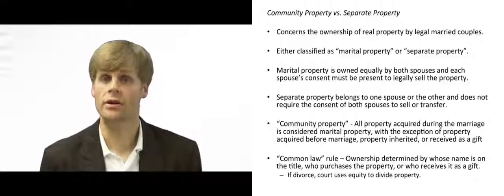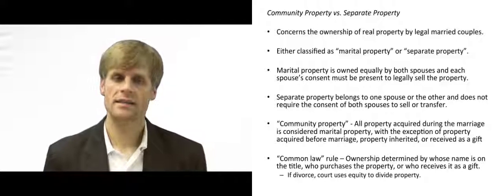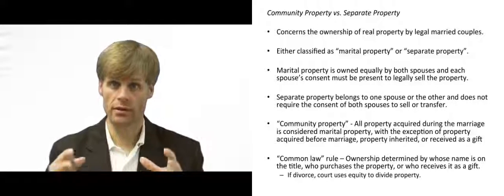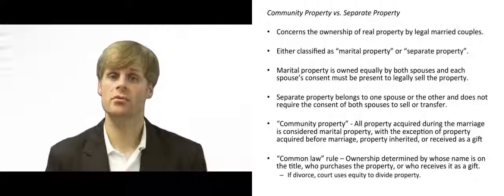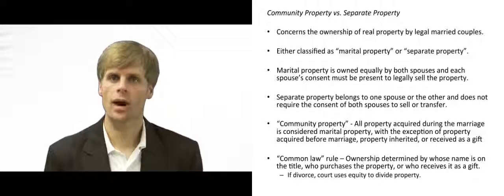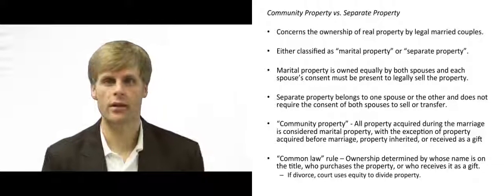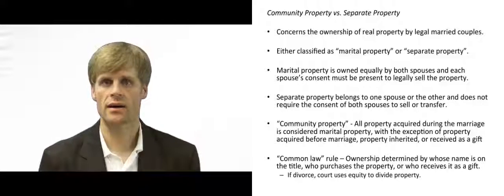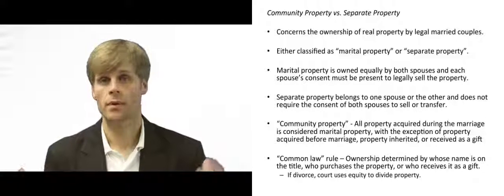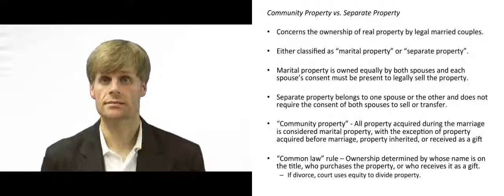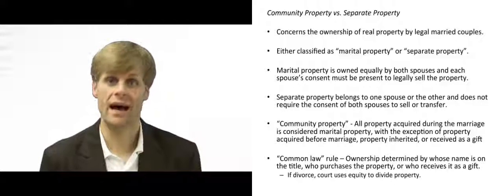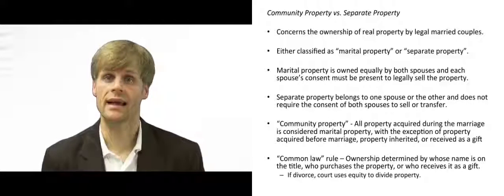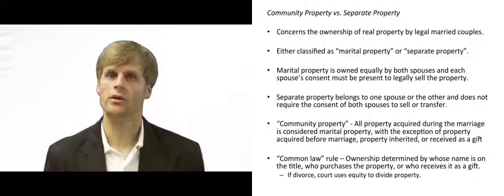In a community property state, any assets acquired after marriage — during the pendency of the marriage, after the time that the couple is wed — any assets acquired by the couple, that is money coming in through salary, any earnings, gains, or anything purchased collectively during that time, belongs equally to both parties. It does not matter whose name is on the title to the real estate, to the vehicle, or whose name is on the bank account — it's community property.